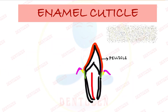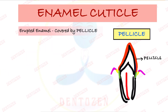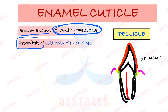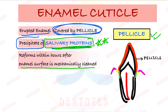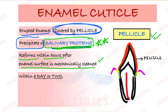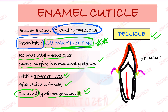After tooth eruption, the primary enamel cuticle gets replaced by another layer — pellicle. Pellicle is a precipitate of salivary proteins, also known as salivary pellicle. When we clean the teeth, the pellicle layer is removed, but it reforms within hours after cleaning. If the pellicle remains for a day or two, it gets colonized by microorganisms — bacteria form a house inside it — and it is then known as bacterial plaque, another very important viva question.